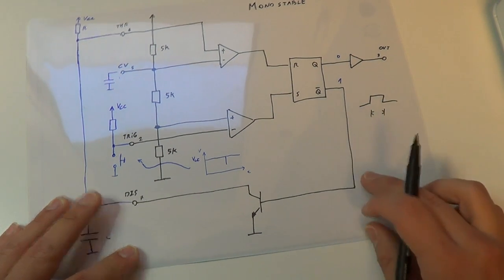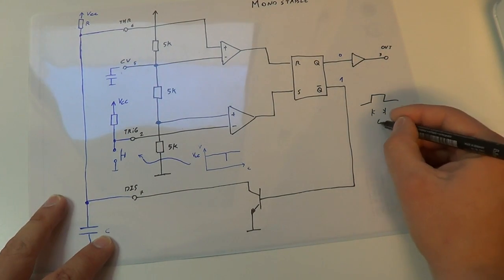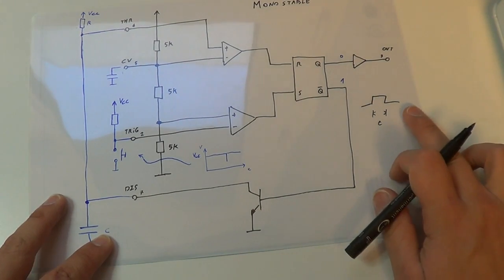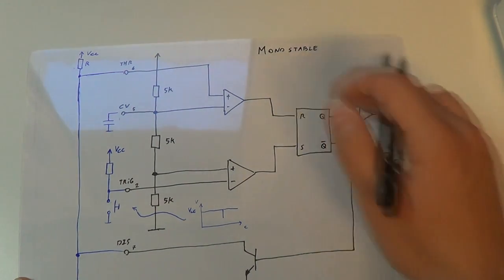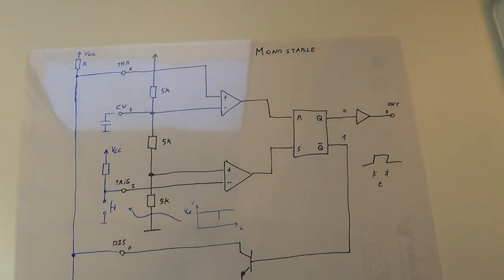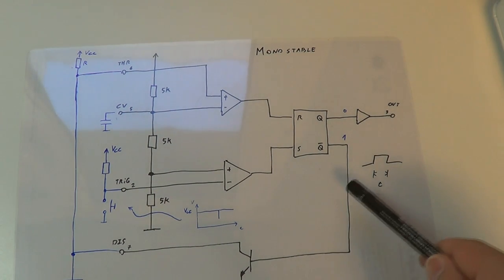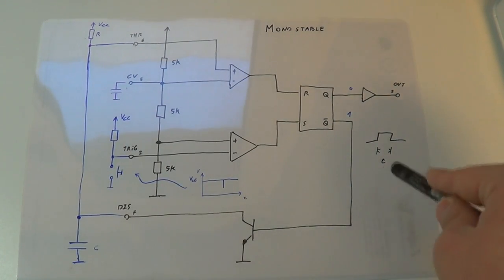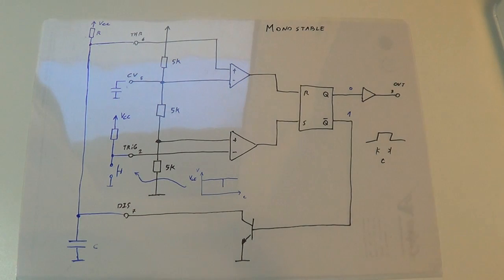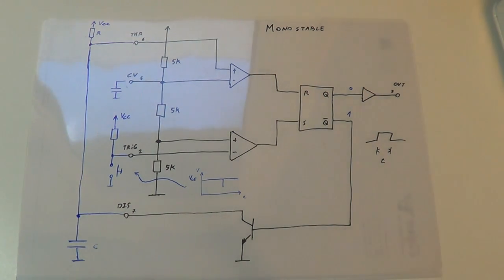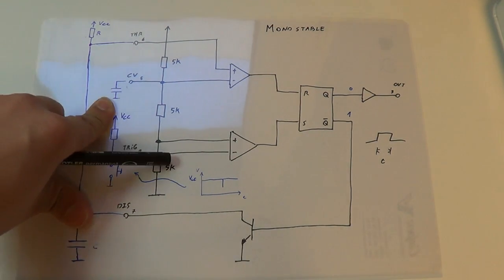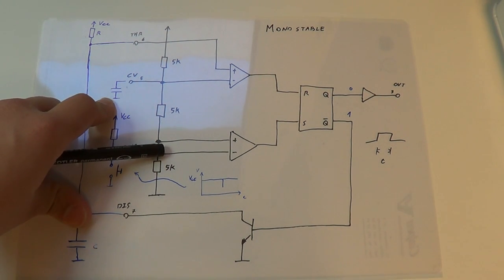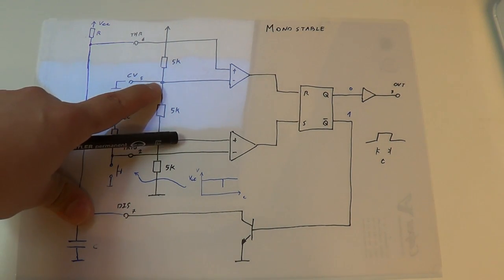By choosing this resistor and this capacitor you can set the time you want for this pulse. That is how monostable operation works — it is called monostable because it has just one stable state. The output low is the stable state; output high is not stable, it goes low after some time. You can trim that time to whatever you want with just this resistor and this capacitor. Also notice that normally the control voltage input is connected to ground through a capacitor, so it is like an open circuit.